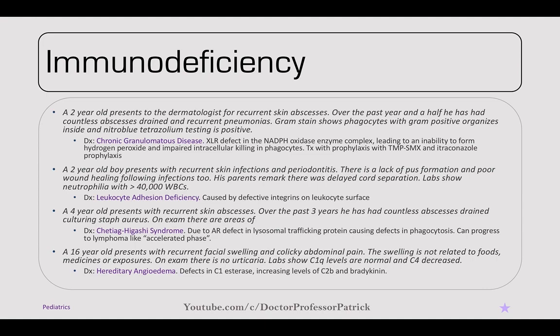A four-year-old presents with recurrent skin abscesses, with staph aureus cultured on multiple occasions. On exam, there are areas of hypopigmented skin. This is Chediak-Higashi syndrome — an autosomal recessive defect in lysosomal trafficking proteins causing defects in phagocytosis. It can progress to lymphoma in an accelerated phase.